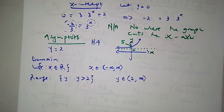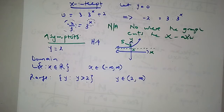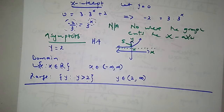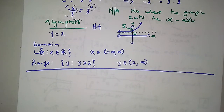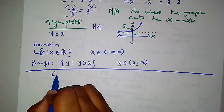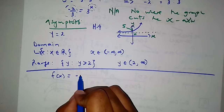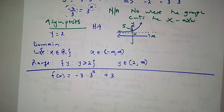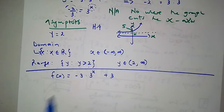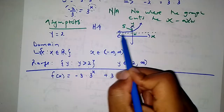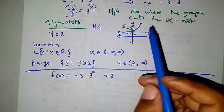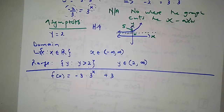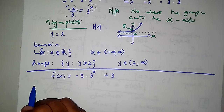To seal the deal, let's consider a different example. What would the graph of f of x equals negative 3 multiplied by 3 to the x plus 3 look like? In this case, a is negative — less than 0 — so your graph is not going to look like the previous one; it will look something like a reflection. Let's find the intercepts of this graph.